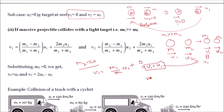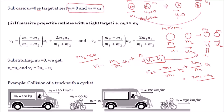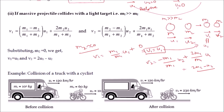For v2, substituting m2 ≈ 0 gives: v2 = (−m1/m1)·u2 + (2m1/m1)·u1, which simplifies to v2 = 2u1 − u2. So the velocity of the second body m2 becomes equal to 2u1 minus u2 — that is, twice the velocity of the heavy projectile minus the initial velocity of the light body. If the second body was initially at rest, after collision it gets a velocity twice the initial velocity of the massive projectile.